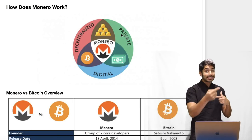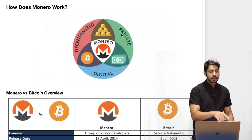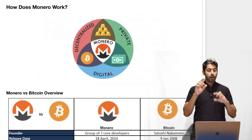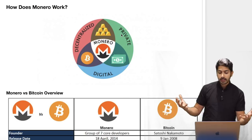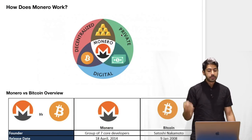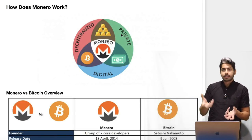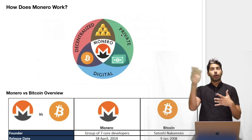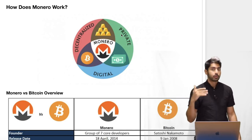That means no one can tell who sent a transaction, who you sent it to, and the amount that you sent — so it's all private, unlike Bitcoin. These three Venn diagram sections show assets that have only two of these properties. Bitcoin is decentralized and digital. Fiat currency like a dollar is private and digital. Gold is decentralized and private. But Monero is all three, and in terms of popularity, Monero is definitely at the top right now.